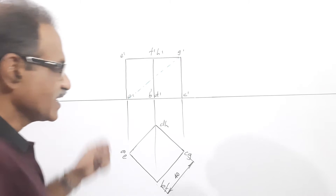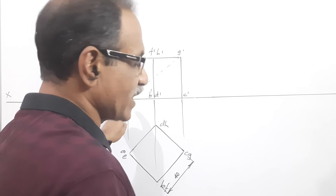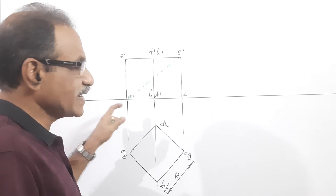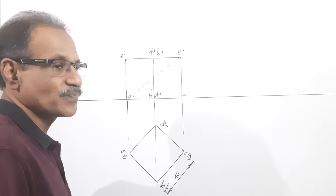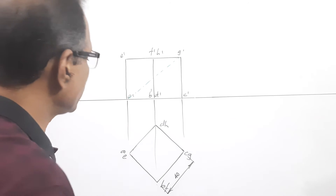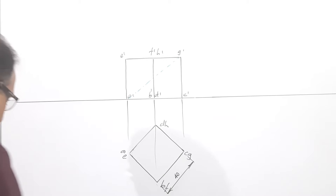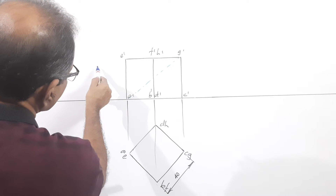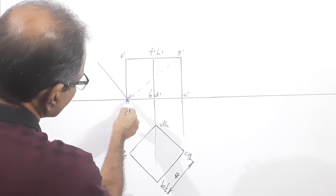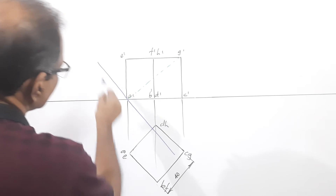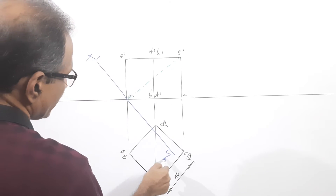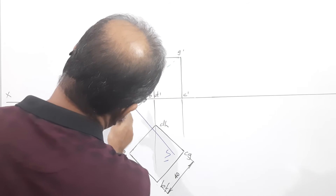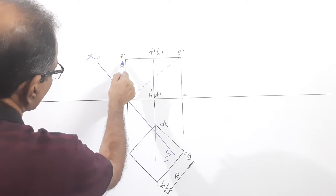The question says the cube is resting on HP on a corner with the solid diagonal vertical. If this is a solid diagonal, I can draw an x1y1 line through this corner so that the solid diagonal is perpendicular to x1y1. Then you can draw a new auxiliary plan.